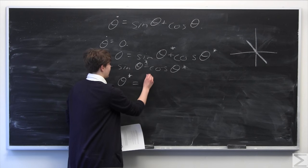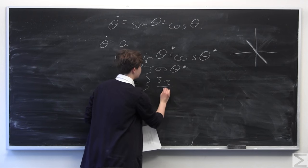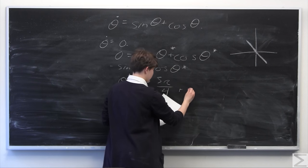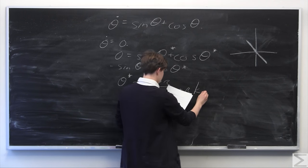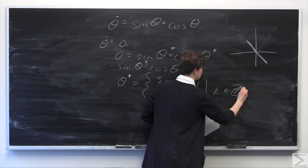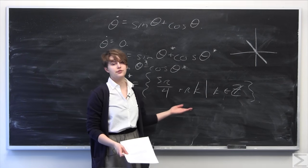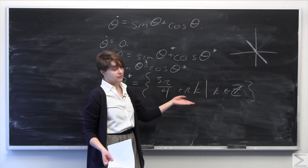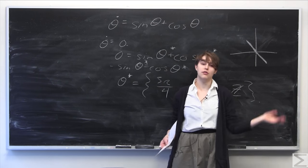All of the fixed points theta star can be classified in the following set: theta star equals 3 pi over 4 plus pi k, such that k is some integer. The value 3 pi over 4 is our point on the unit circle, and adding integer multiples of pi gives us all the fixed points — here, here, here, and on throughout the integers.